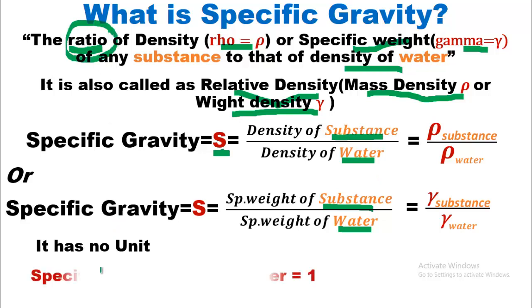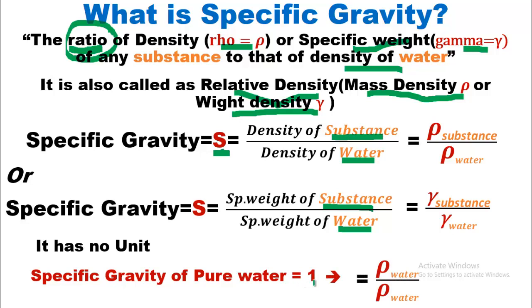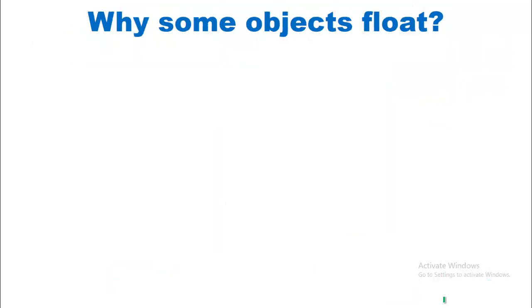The specific gravity of pure water is equal to one. As we know, density of pure water divided by density of pure water gives us 1000 divided by 1000, which equals one. So it is important to remember that the specific gravity of pure water is one. Now let's proceed to the question of why some objects float and others sink in water.